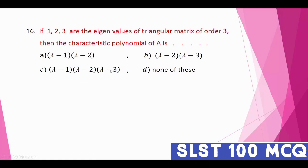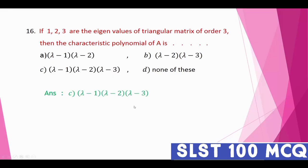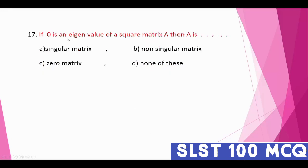Question number sixteen: if 1, 2, and 3 are the eigenvalues of a triangular matrix of order three, then the characteristic polynomial of A is (λ − 1)(λ − 2)(λ − 3). Option C is the correct answer.